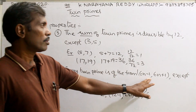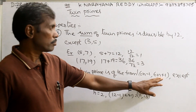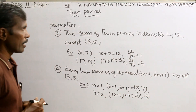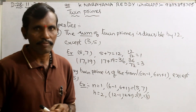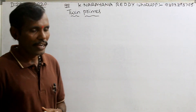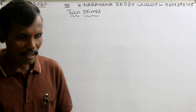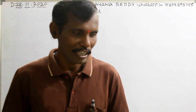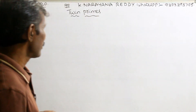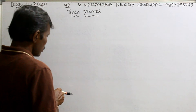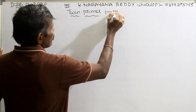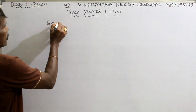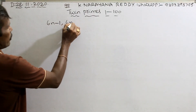So the form of twin primes is 6n−1 and 6n+1. Now let us see how many twin primes are there from 1 to 100. What is the form of twin primes? 6n−1 and 6n+1.